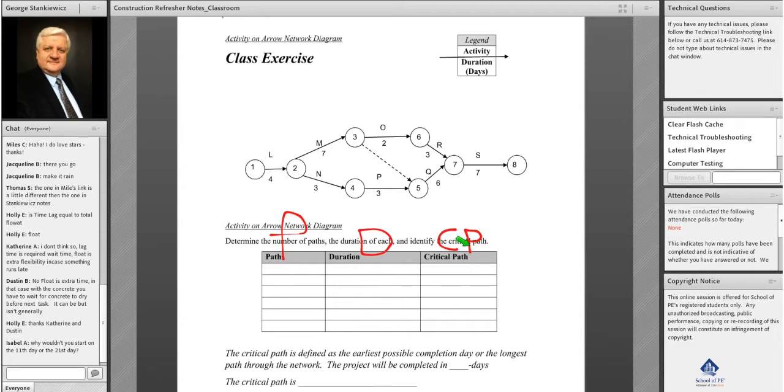We start out and we just identify all the paths. We're going to do this together. So we have L, M, O, R, and S that gets us to the end. Is there another path? Yep, there's another path and it's L, N, P, Q, and S. All right, that's good, so we got two paths.